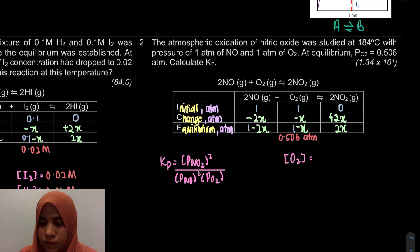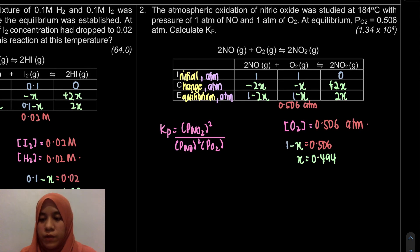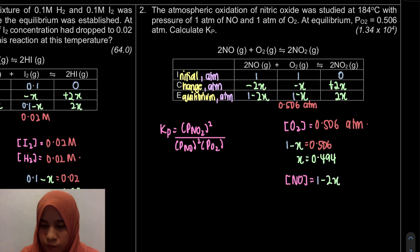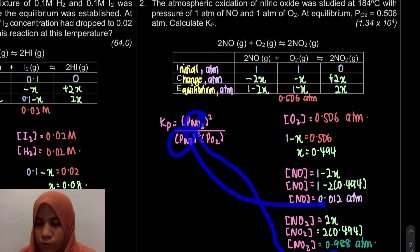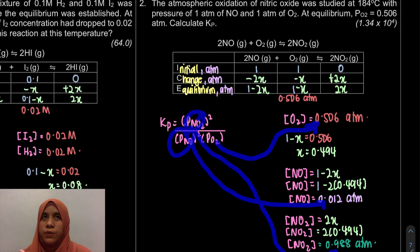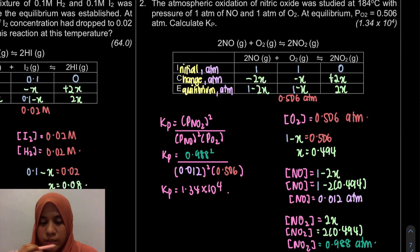Once we find X, we substitute into the equilibrium expressions for NO and NO2. So NO2 at equilibrium = 2X = 2(0.494) = 0.988 atm. NO at equilibrium = 1 minus 2X = 1 minus 0.988 = 0.012 atm. O2 at equilibrium = 0.506 atm. We then substitute all three values into the KP expression to get the final answer. That is the answer for question number 2.